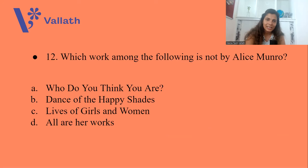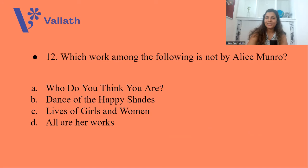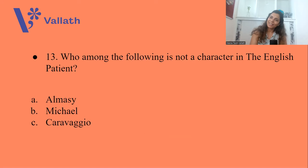Question number twelve: Which work among the following is NOT by Alice Munro? A. Who Do You Think You Are? B. Dance of the Happy Shades? C. Lives of Girls and Women? All of these are Alice Munro's works, so the answer is D — all are her works.